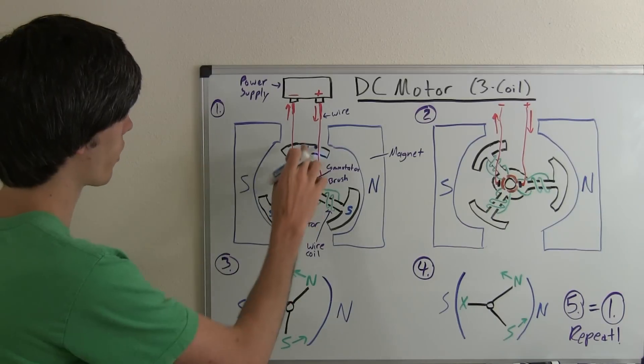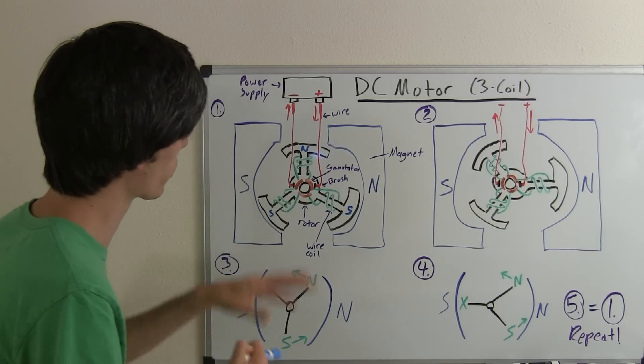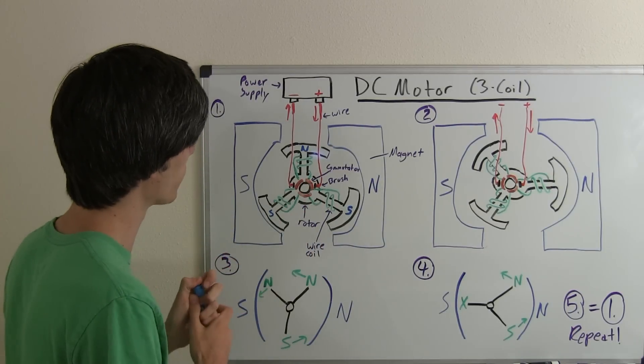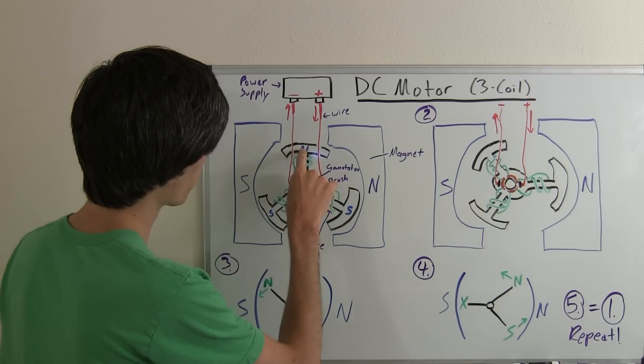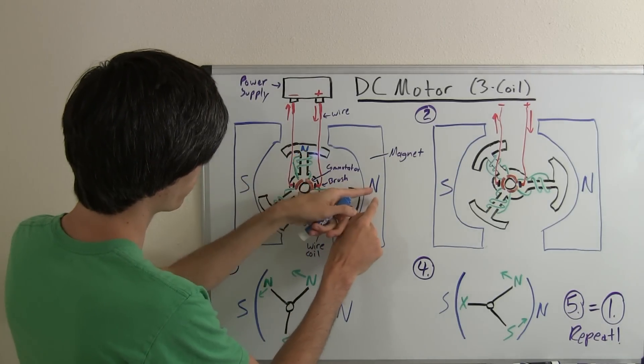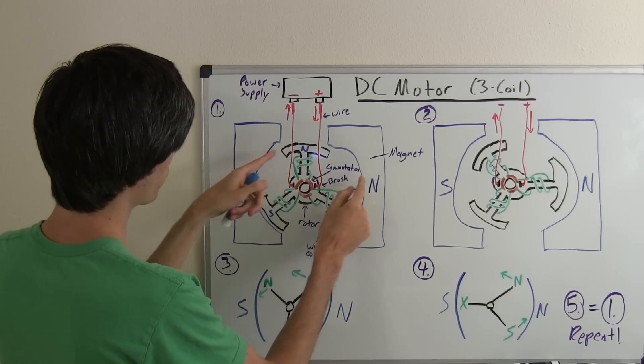Okay great so now that we have our poles established and we've created these electromagnets we can kind of figure out why this thing's going to rotate. So you've got a north pole here so the north wants to attract to the south pole, opposite attract, and it wants to get away from this north pole here so it's going to push itself away.